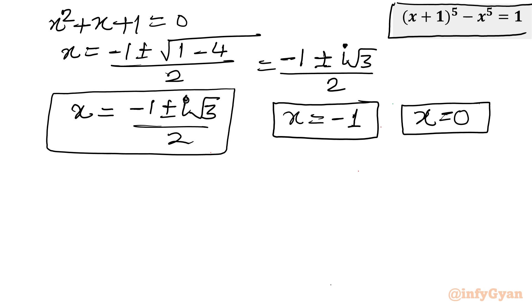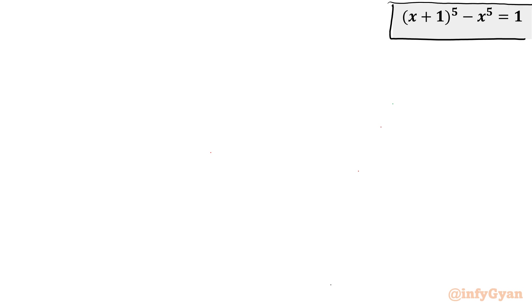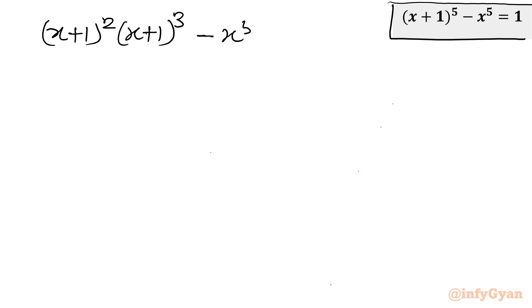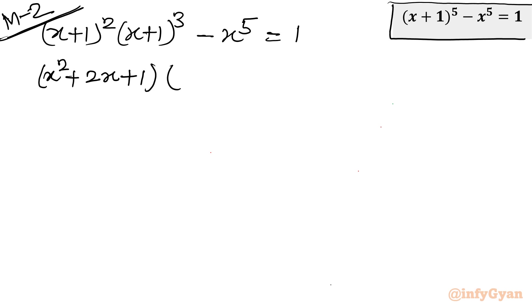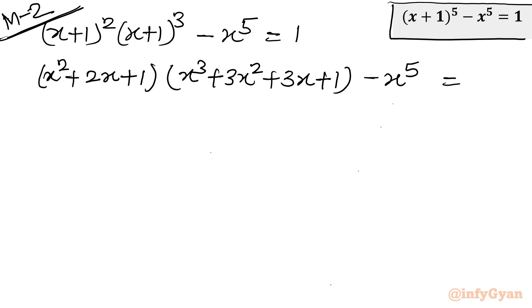Now I will showcase Method 2 — solving without Pascal's triangle, using only the fundamentals of algebra. I will rewrite the equation by expanding (x+1)^5 directly: first compute (x+1)² = x² + 2x + 1, then (x+1)³ using the cube formula a³ + 3a²b + 3ab² + b³, then multiply these together minus x^5 = 1.